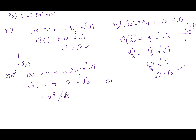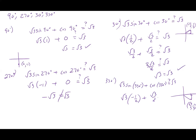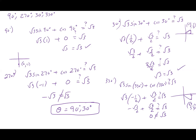And one more: 330 degrees. Root three times sine of 330 degrees plus cosine of 330 degrees — is that equal to root three? At 330, we are at positive root three over two, negative one half. So root three times negative one half for sine, and positive root three over two for cosine. That's going to be zero — not equal to root three. So the final answer: theta equals 90 degrees and 30 degrees.